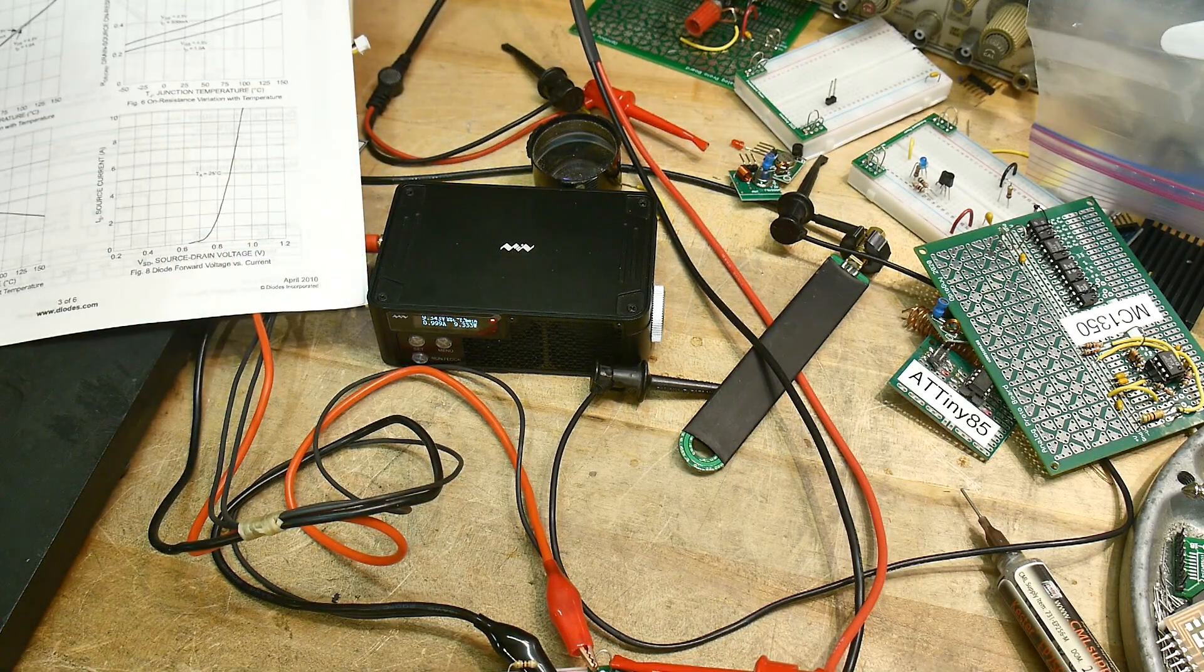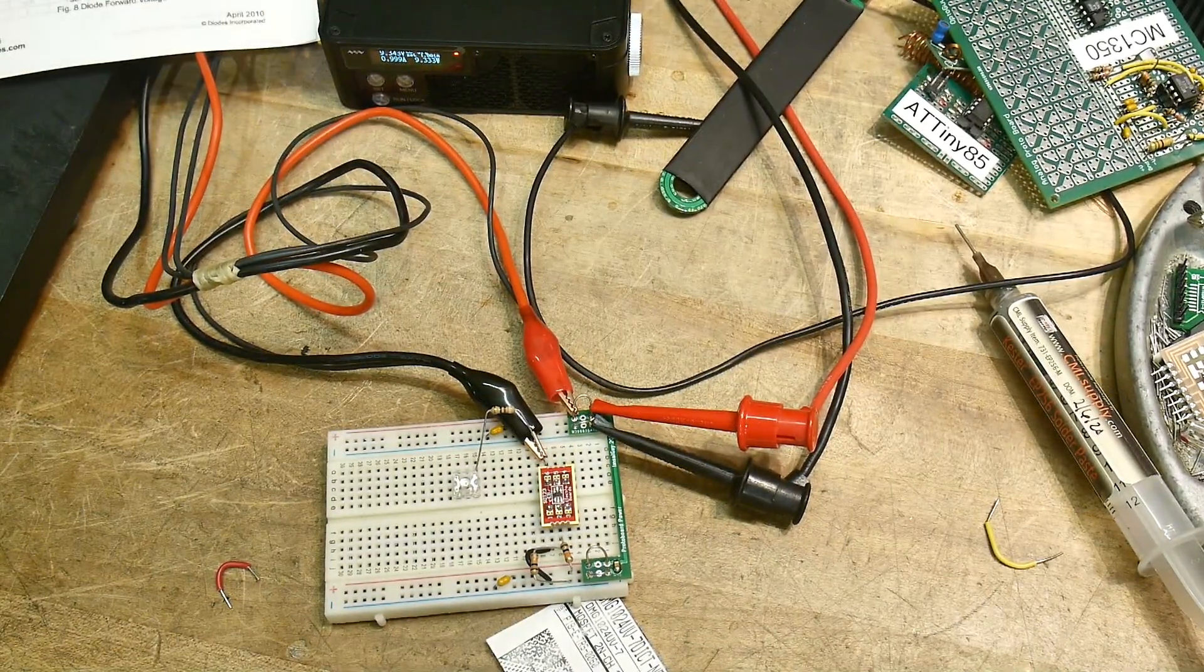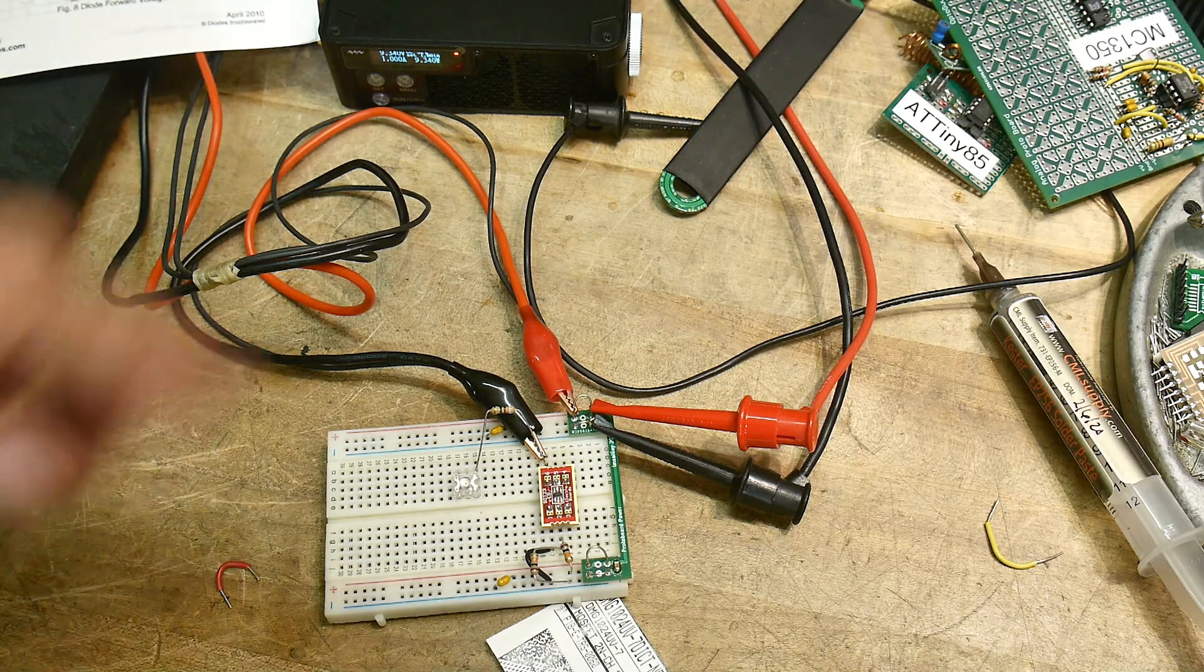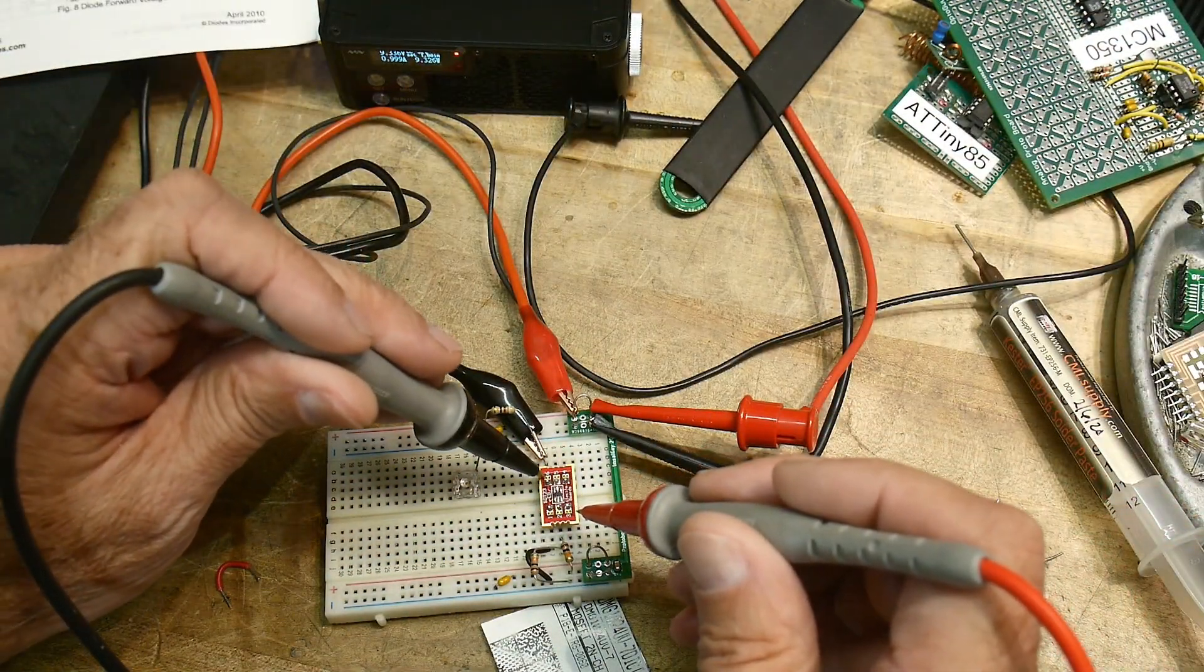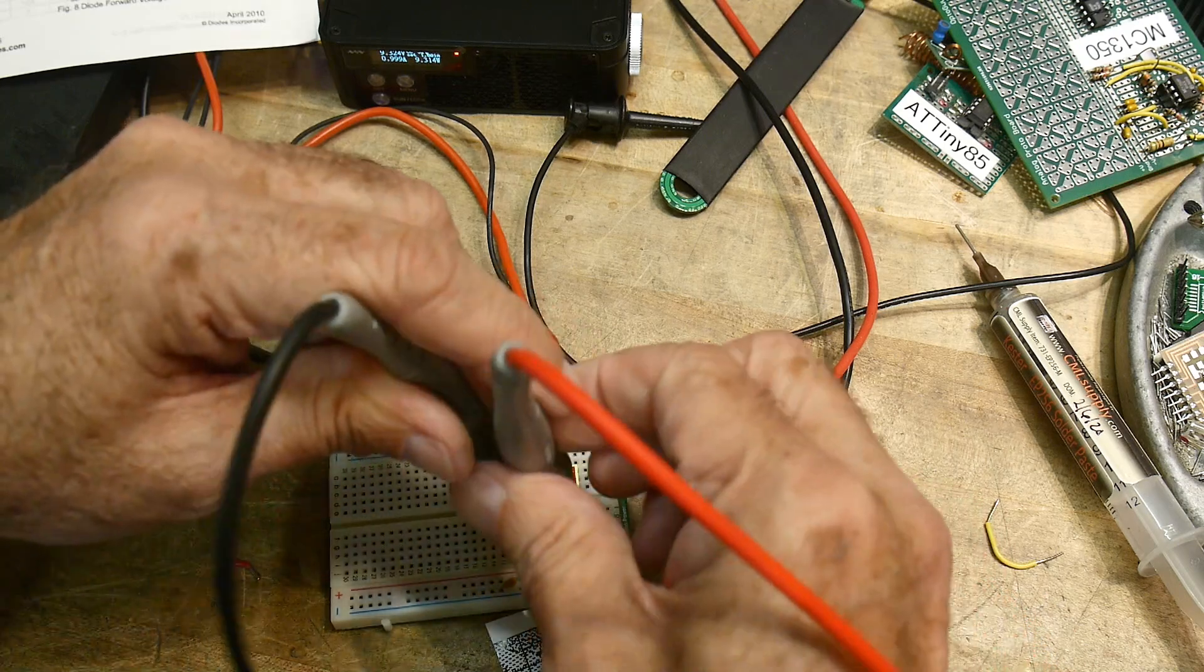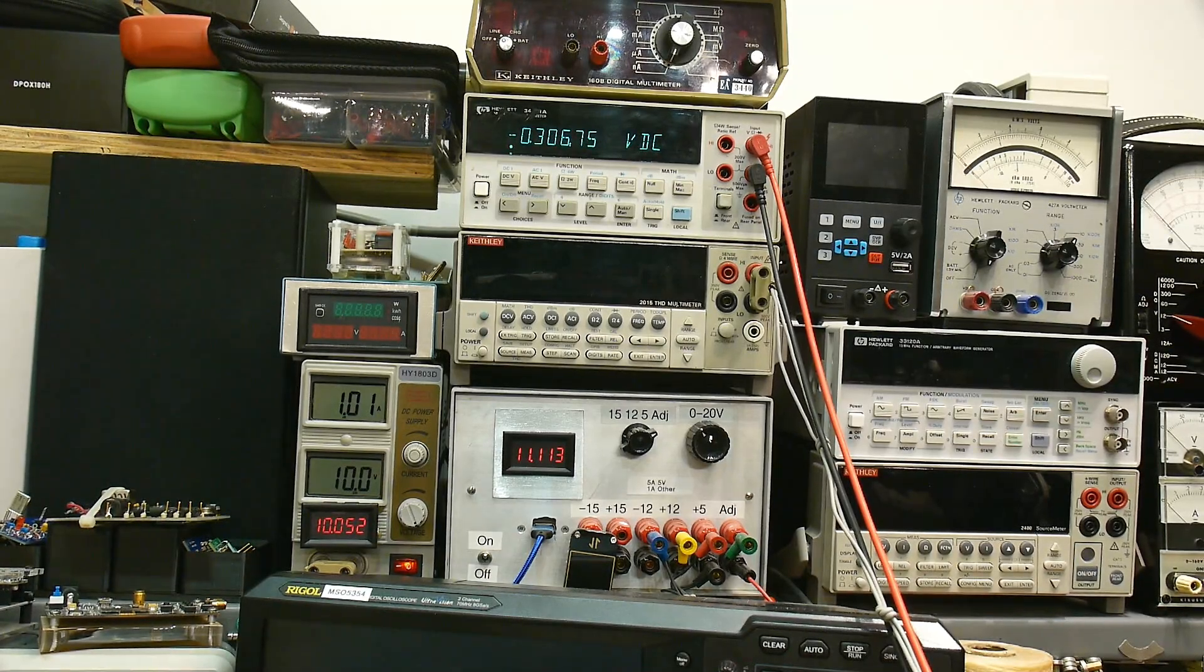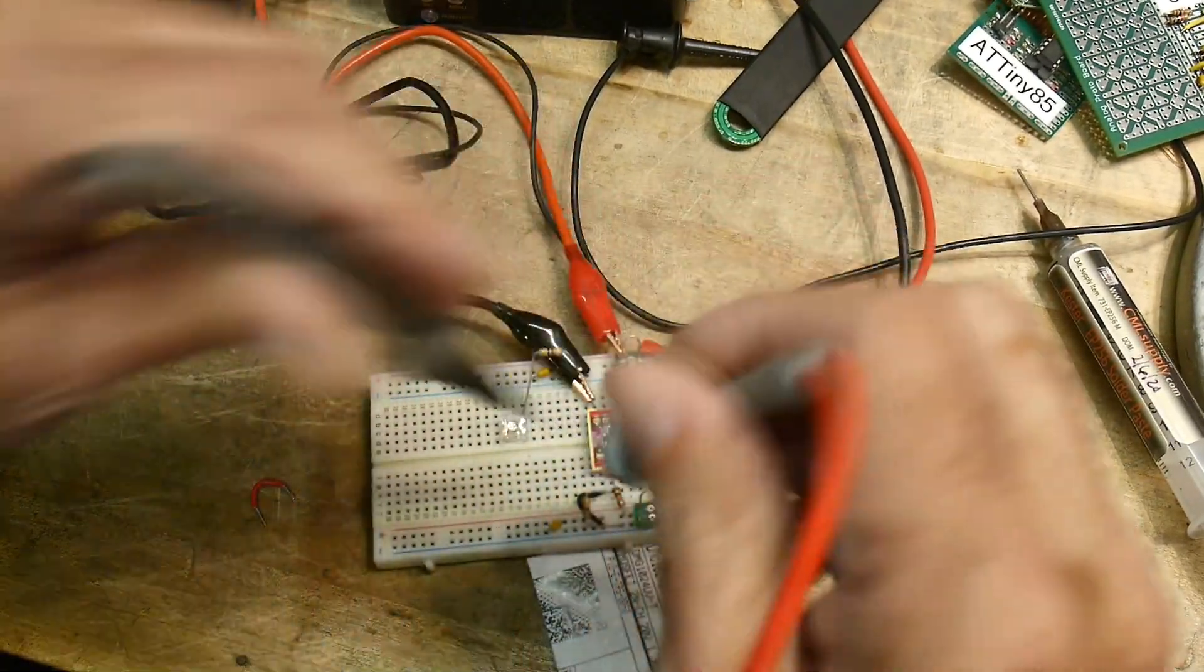Okay, one amp. So I'm gonna turn this sucker on and yep, we are drawing one amp through this thing. It's pretty cool. So let's measure the voltage across the part because it should be like 0.3 ohms or something like that. We're going to measure the voltage across the part.